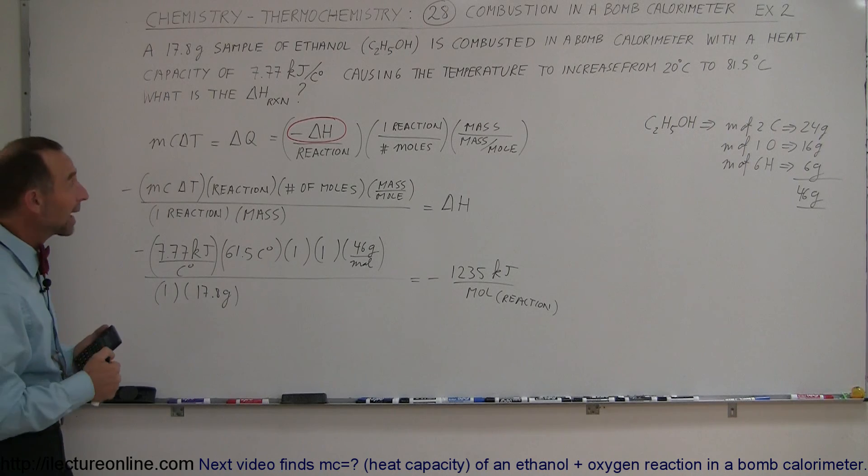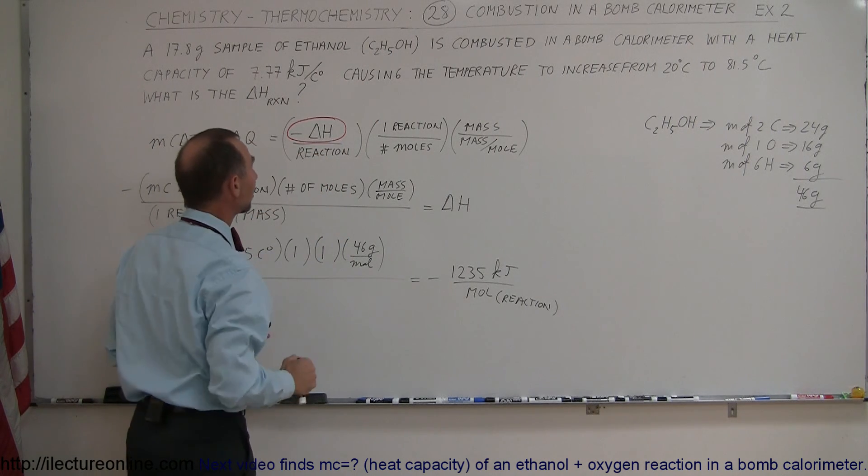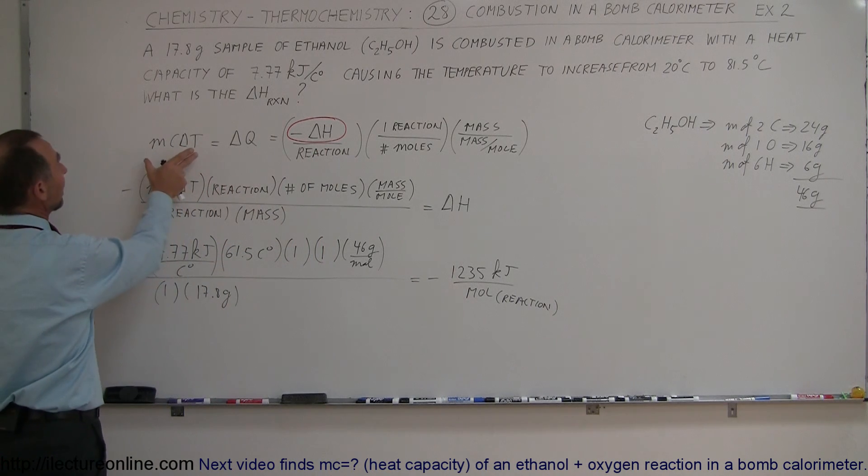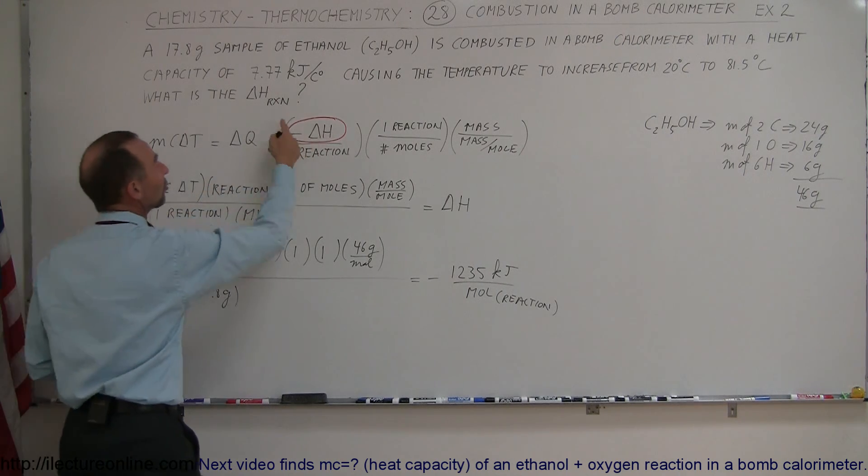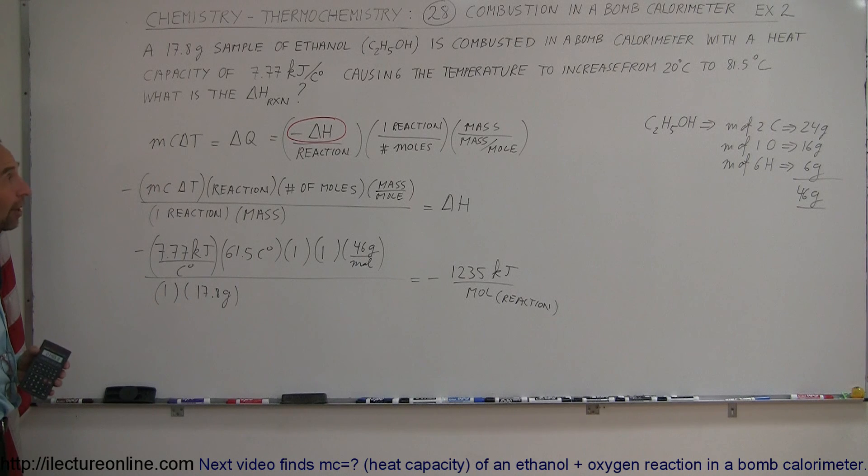When we want to find out the enthalpy change of the reaction, we put the reactant in the bomb calorimeter, we light a little spark, the reaction takes place, and then we set that the heat absorbed by the calorimeter is equal to the heat given out by the reaction, which can be calculated using this equation. That's how you do this problem.